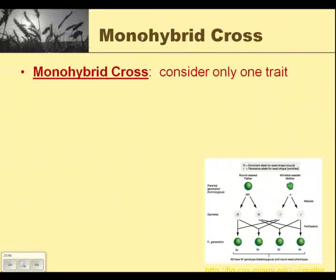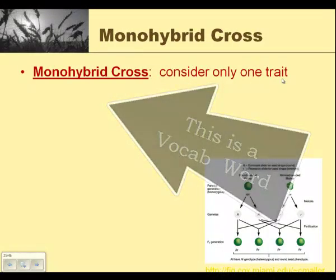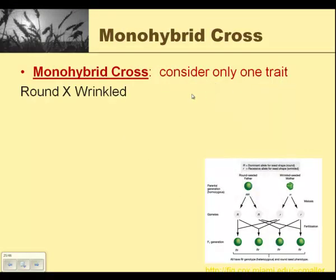A monohybrid cross — if you break it down, the word mono refers to one. So a monohybrid cross is a cross that is looking at only one trait. For example, if we're looking at seed shape, that is our one trait, and we're looking at two contrasting parts within that, which would be round or wrinkled. So the seed is either round or wrinkled.